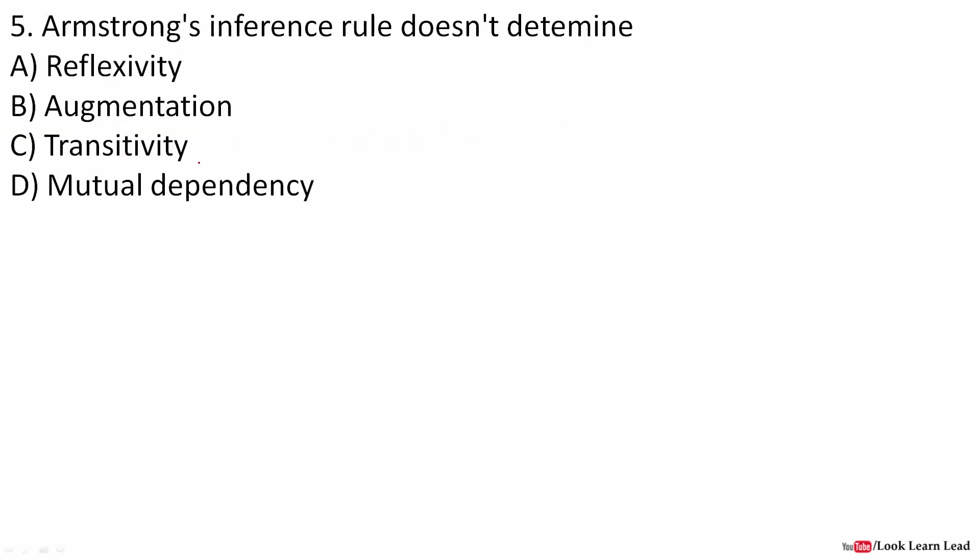Armstrong's inference rule does not determine what? Let's see what are Armstrong's inference rules. Armstrong's inference rules satisfy reflexivity, augmentation, and transitivity. What is reflexivity? If B is a subset of A, then A implies B is trivial. What is augmentation? If A implies B, then AX must imply BX.